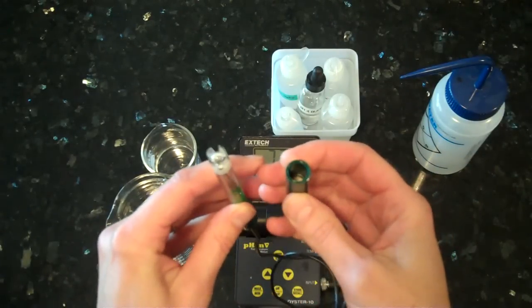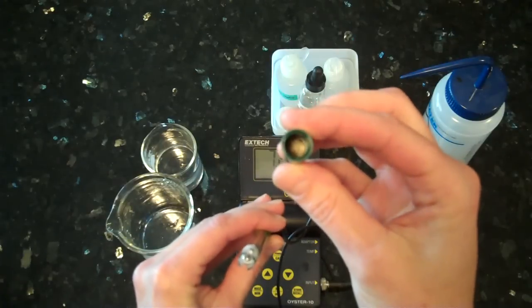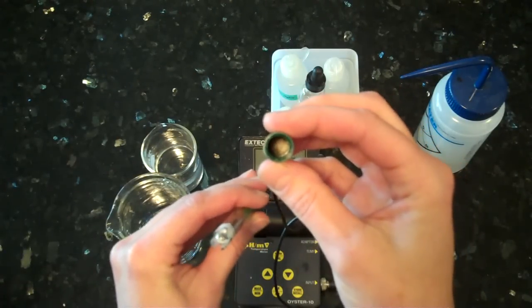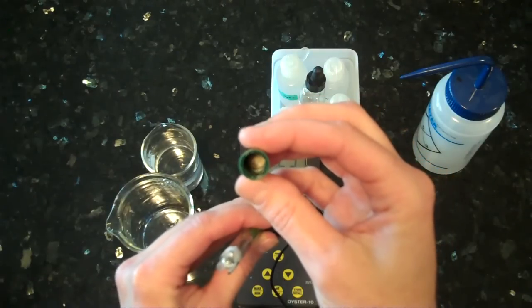There are a couple of things you should know before you begin. One is that if you look inside the cap, there's a little sponge, and that sponge, when you are all done using the pH meter, needs to be saturated with the pH 4 solution.